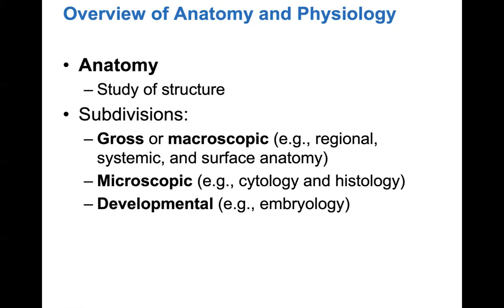One of the important things in this chapter is the directional terms. Directional terms are used to describe positions of structures within the human body. You need to memorize this list of terms because when you read a question on a test it will be described in these terms. For example, I could ask which structure is dorsal to the tibia, and you'd need to know what dorsal means.